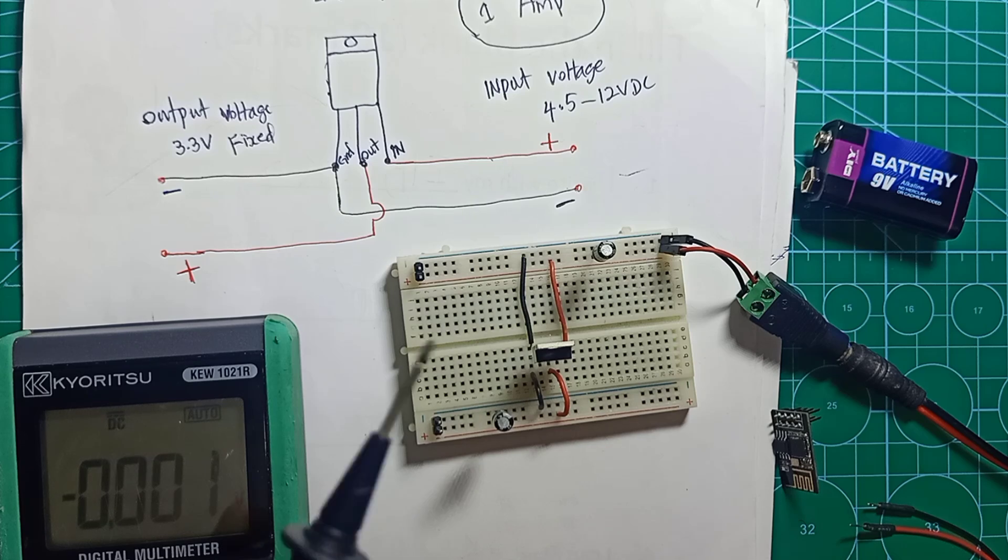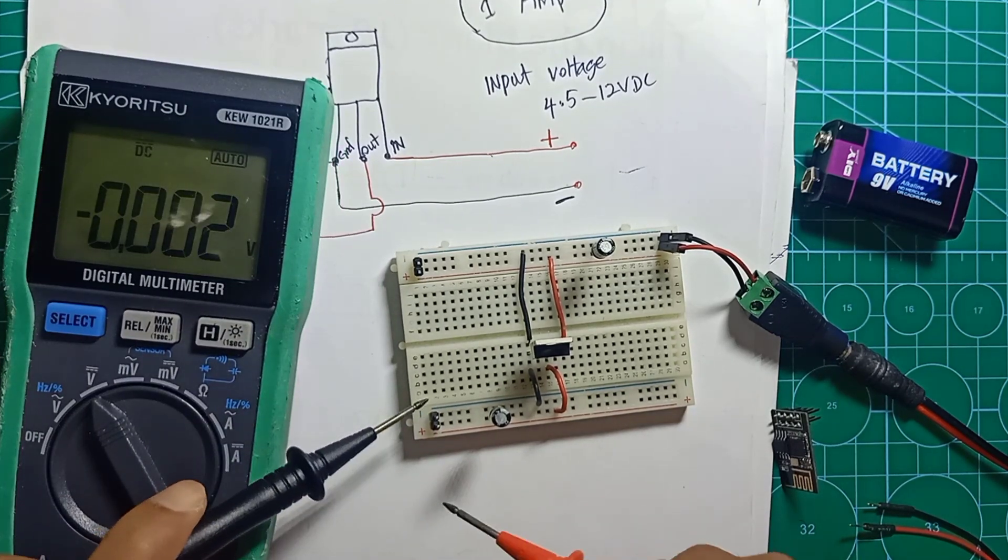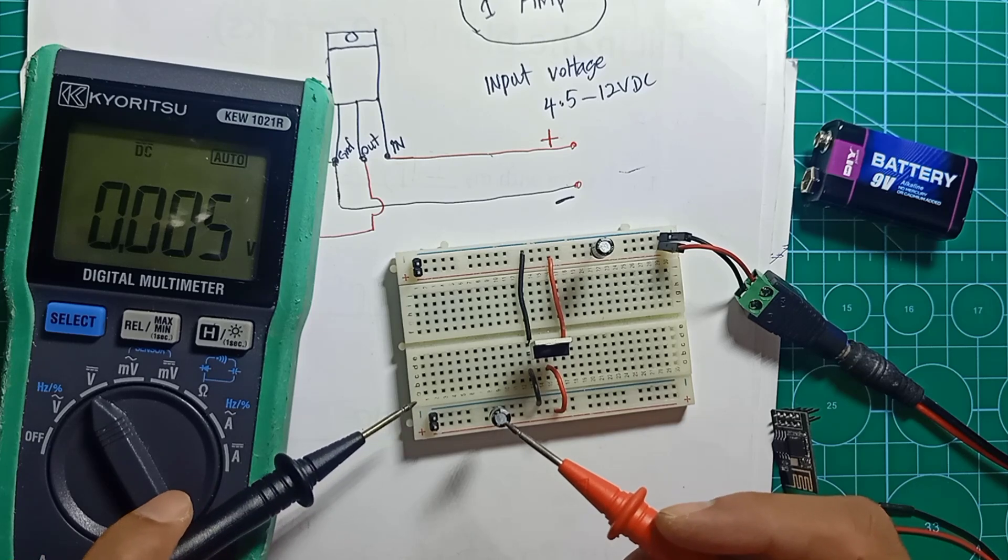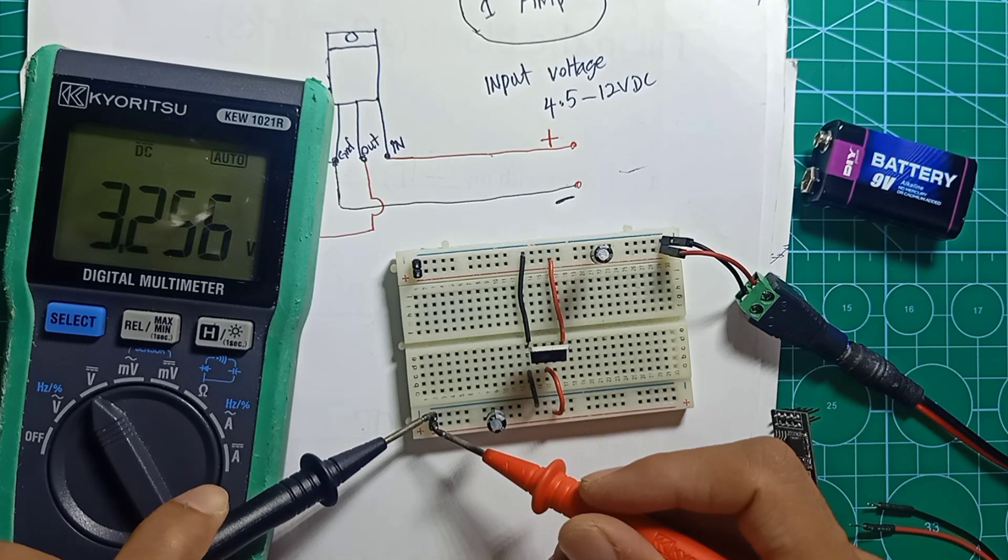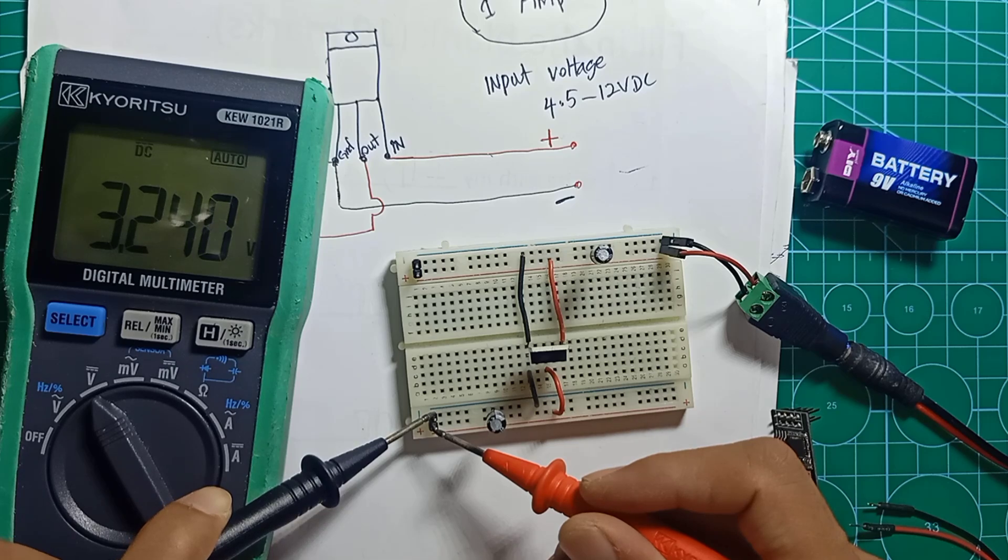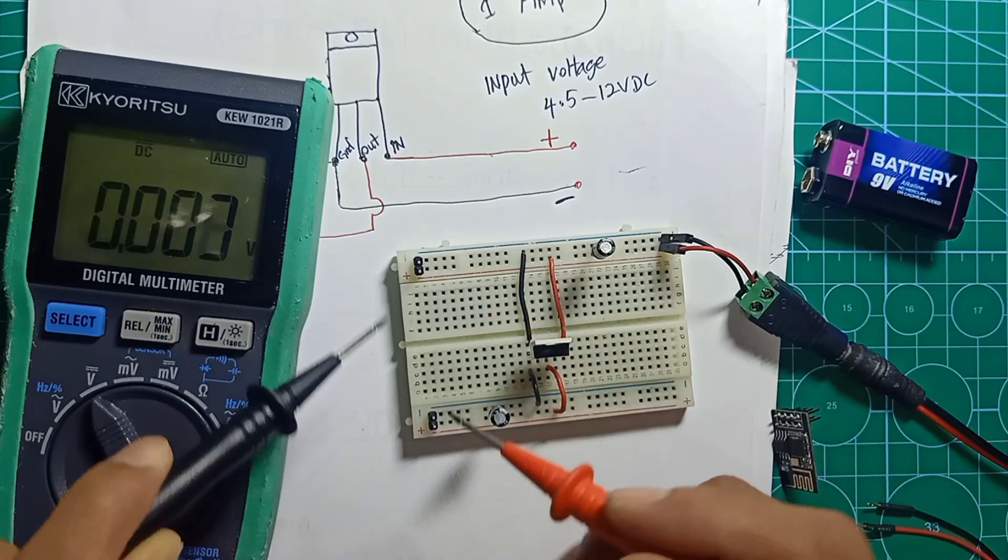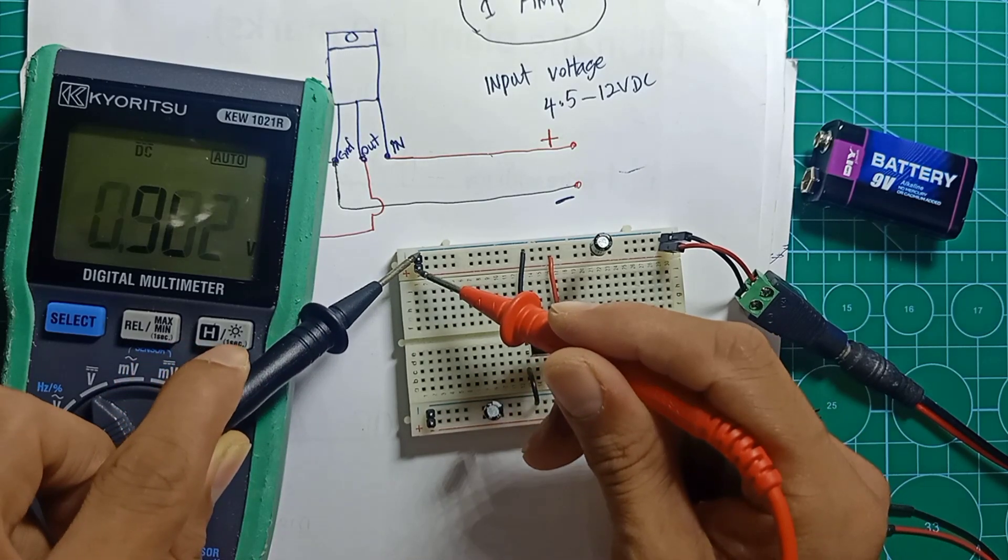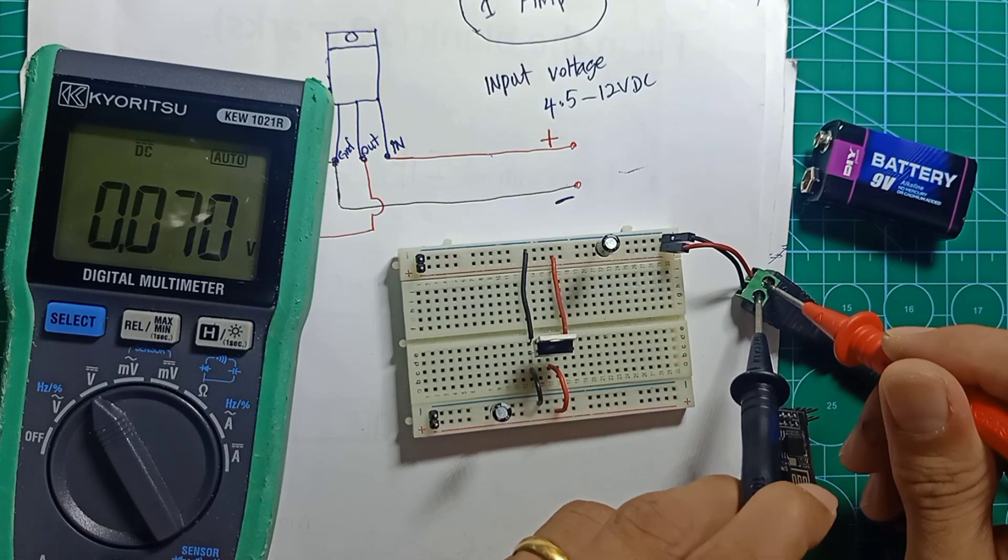We can check the voltage again. The voltage will be the same, meaning that adding the capacitor is to make it smooth and stable output. 3.278 volts - this is the output we get from 12 volt input.